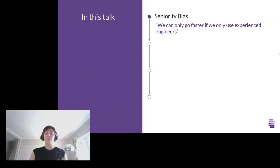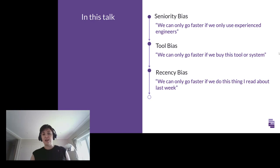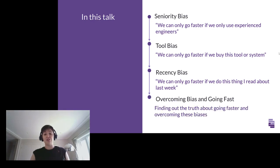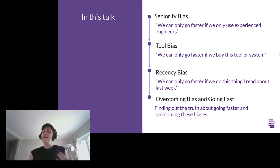We're going to talk about three biases: seniority bias, tool bias, and recency bias — and how each of these can manifest inside your teams and your practices to create vulnerabilities and problems that could lead to security issues. We're going to round out today by overcoming that bias and learning how to go even faster.